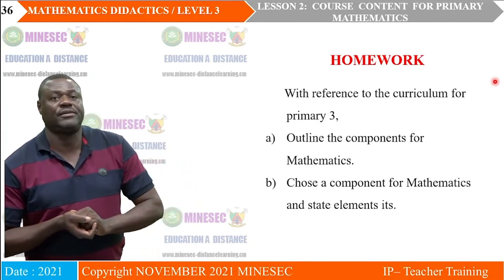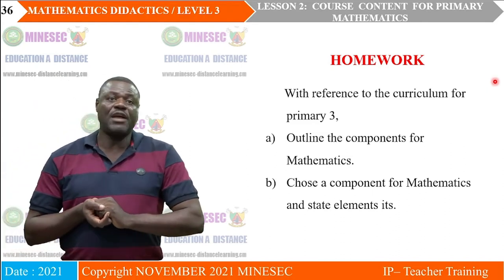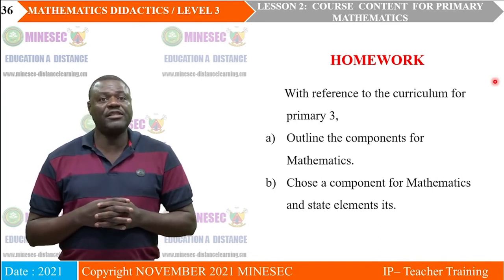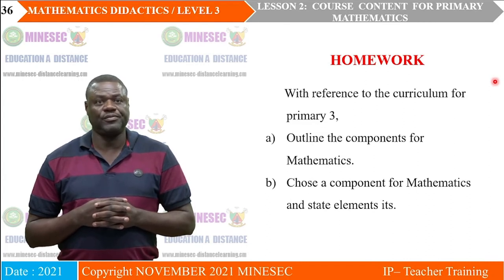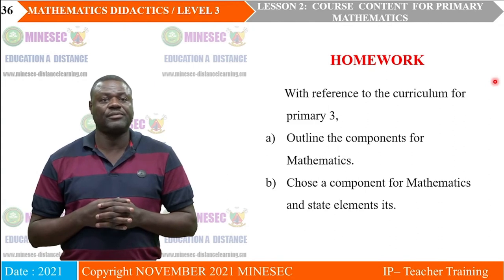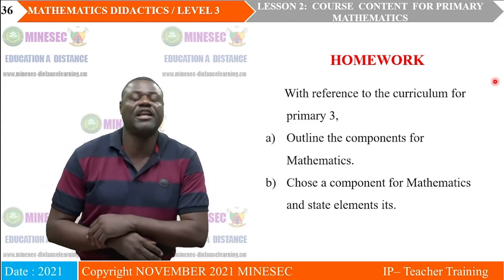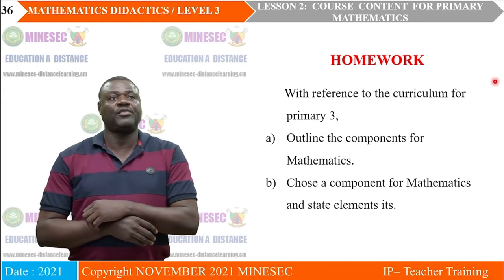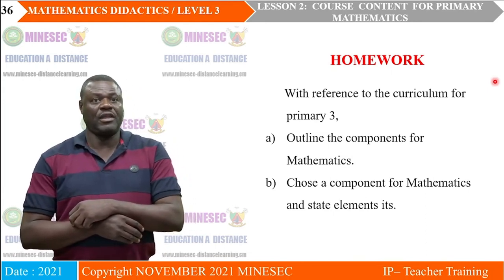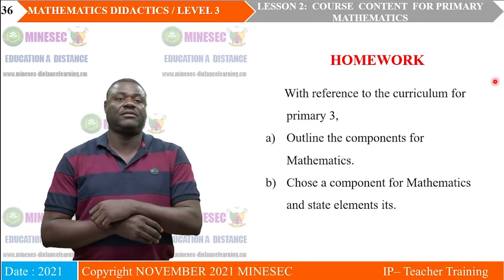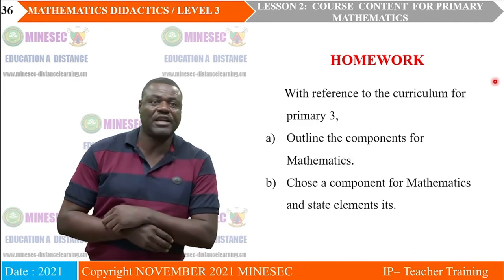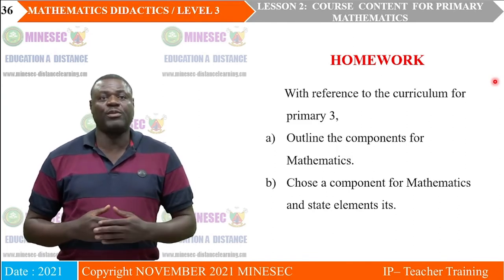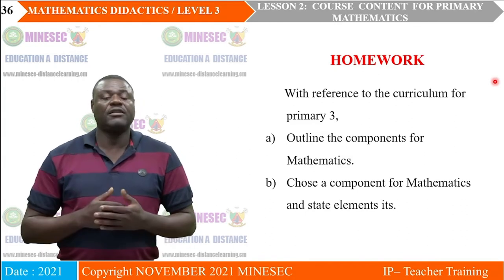We have a take-home assignment. Do this assignment at home and bring it to our next lesson. It reads: With reference to the Cameroon Primary School curriculum for primary theory, (1) outline the components for mathematics, and (2) choose a component for mathematics and state the elements in it. This requires that you look for the curriculum — if you don't have it, try to obtain one, and in it you will find answers to this problem.